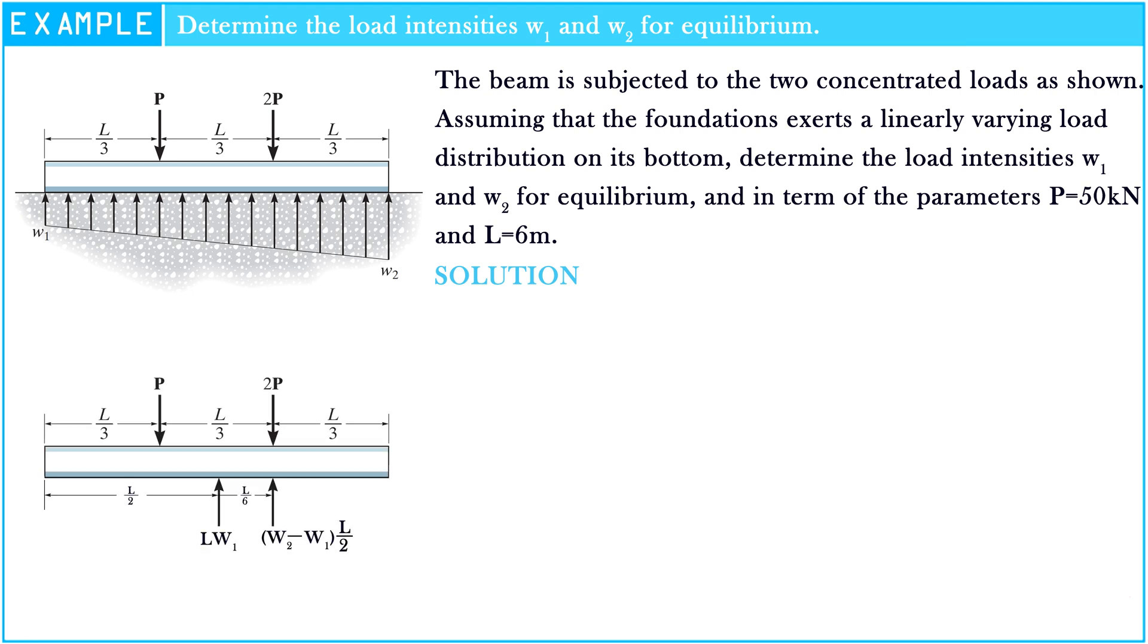After that, let's apply the moment equation of equilibrium by summing moments at point A. The sigma of moment at point A is equal to 0. So, P multiplied by L over 3 minus W1 multiplied by L multiplied by L over 2 is equal to 0. Hence, W1 is equal to 2P over L.